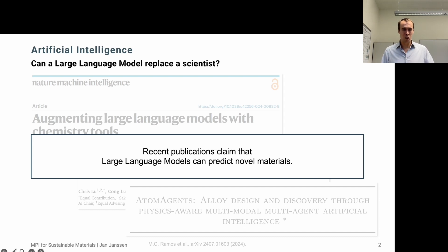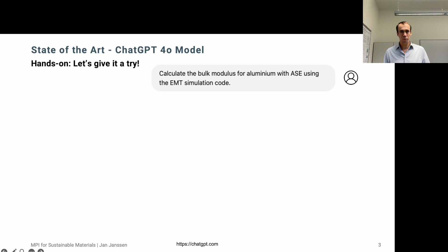So I want to use the following minutes to illustrate what are the capabilities of large language models and how we can combine them with our expertise as material scientists to predict novel materials. We start by asking ChatGPT to calculate the compressive bulk modulus for aluminum with the atomistic simulation environment and the effective medium theory simulation code. So I'm very specific in my physical parameters, bulk modulus for aluminum, and the technical parameters of using the atomistic simulation environment and the effective medium theory simulation code.